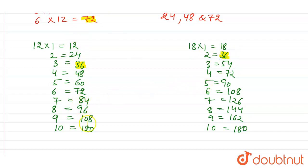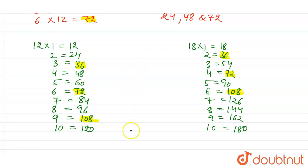Now let's check the common multiples. The first common multiple is 36, the second common multiple is 72, and the third common multiple is 108. So the three common multiples of 12 and 18 are 36, 72, and 108.